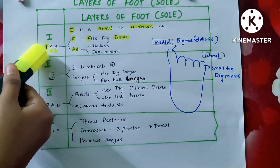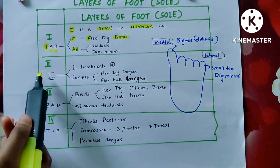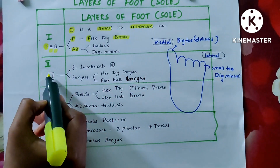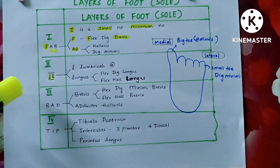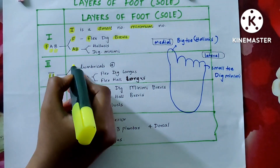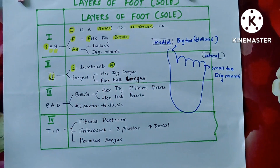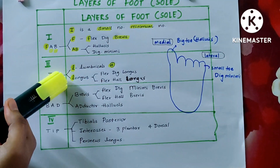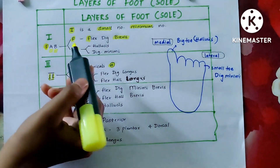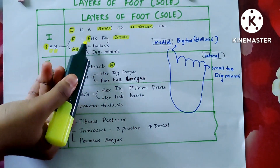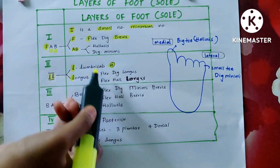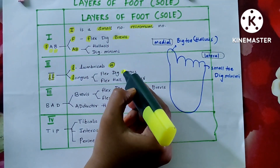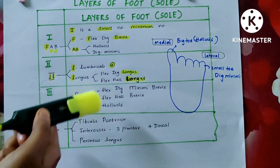This completes the first layer — FAB. Coming to the second layer, you can make two L's from the Roman numeral II. The two L's are: one for lumbricals, which are four in number, and the second L is for longus. These are tendons, not muscles per se — the tendons of two muscles derived from the first layer names: flexor digitorum longus and flexor hallucis longus.